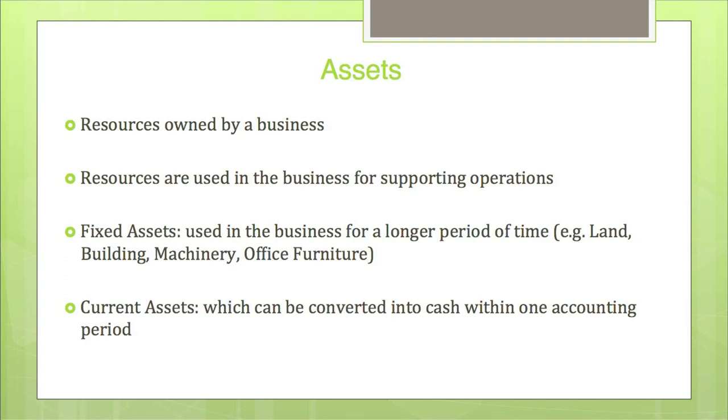Next, current assets. Current assets are those which are converted into cash within an accounting period. They will easily be converted into cash, changing form from one current asset to another. For example, a debtor can be easily converted into cash. Or take raw material — when it is processed, it becomes a finished product, and the finished product will be sold in the market against cash. So that raw material is converted into cash within one accounting period, and therefore it is termed as a current asset.